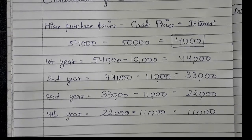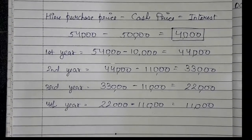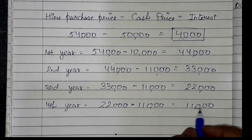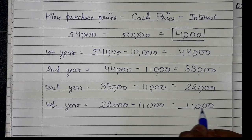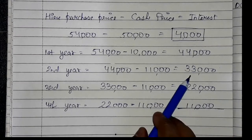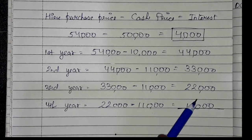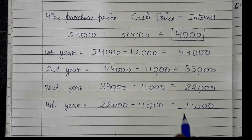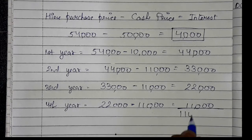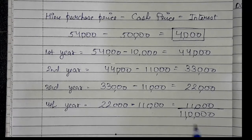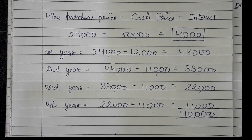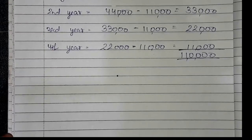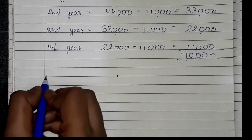This is our total cash outstanding. We add all: 44,000 + 33,000 + 22,000 + 11,000 = 1,10,000. This is our total money distributed, and now we will put the interest allocation.